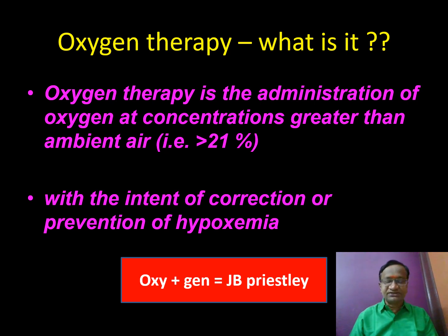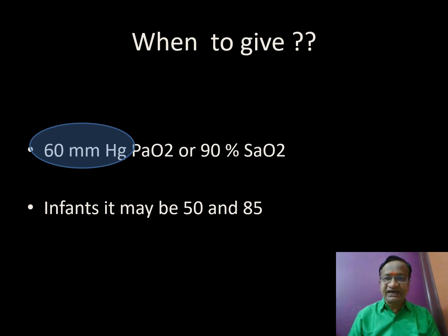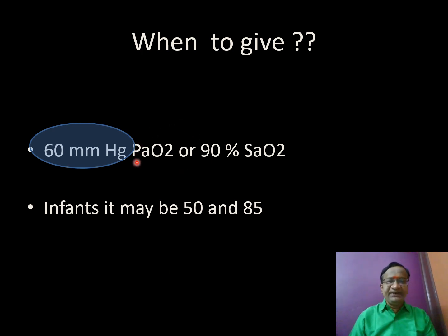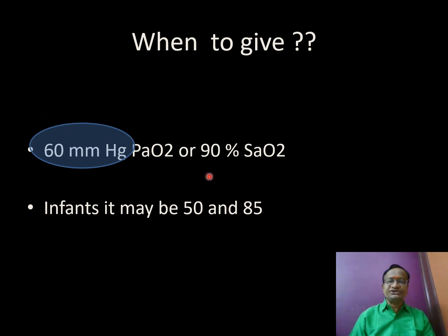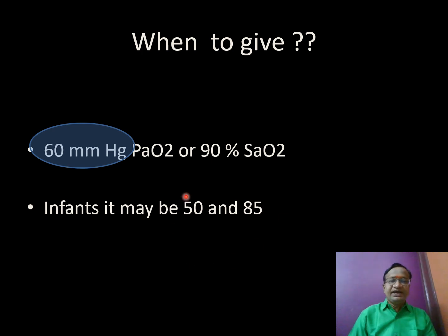When to give oxygen: diagnose hypoxemia when PaO2 is less than 60 mmHg or oxygen saturation is less than 90%. This is what is called hypoxemia. In infants the threshold may be slightly different.